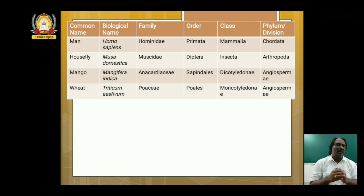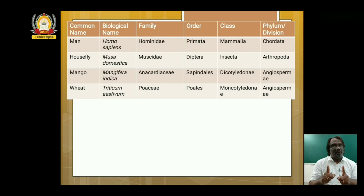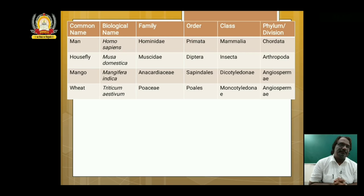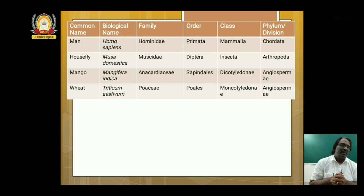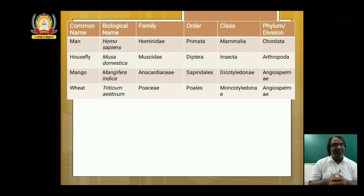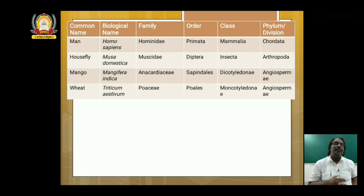How many times you write — either three times, five times or ten times — is left to you. But write until you are confident of answering. If I ask you — for example, mango, which class does it belong to? You have to tell immediately: Dicotyledonae. Housefly, which order does it belong to? Diptera. If I ask you the family of man, you have to tell Hominidae. So how many times you write is secondary — write until you are perfect. Need-based questions come from it.